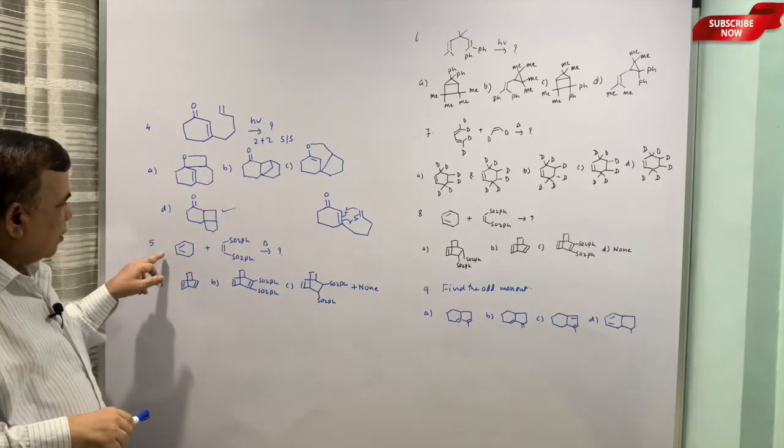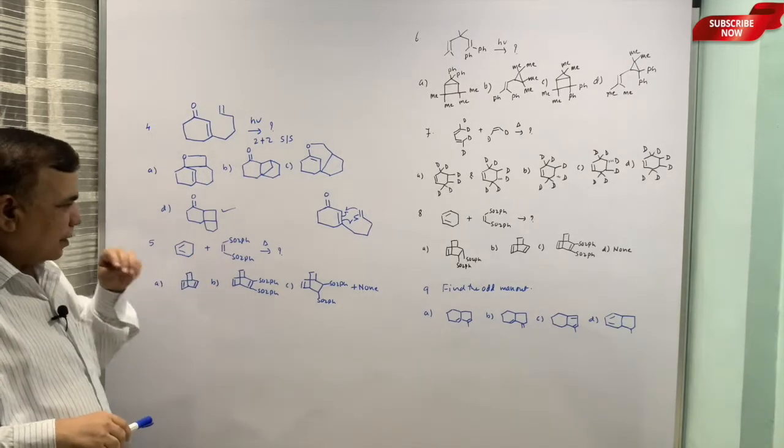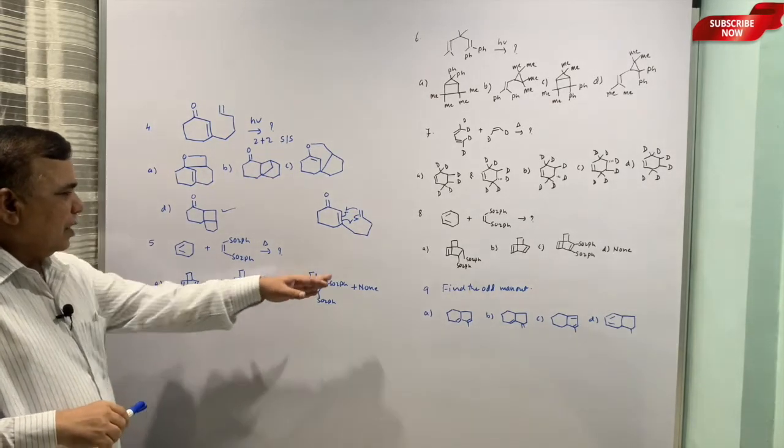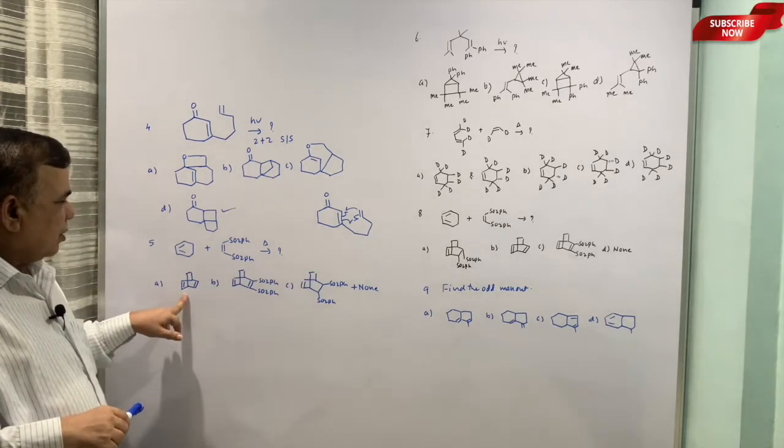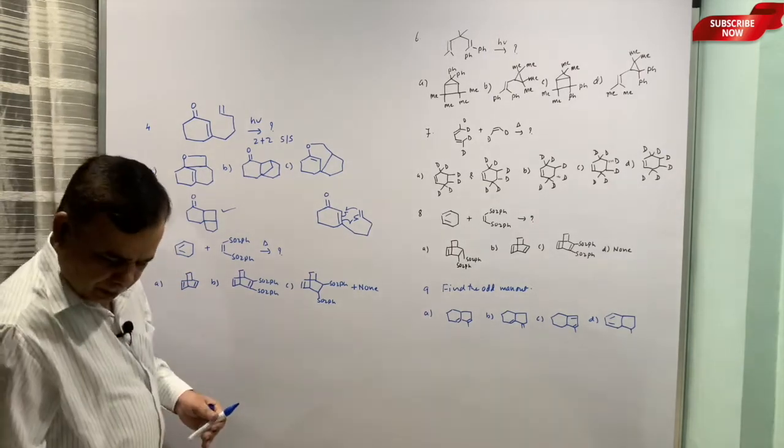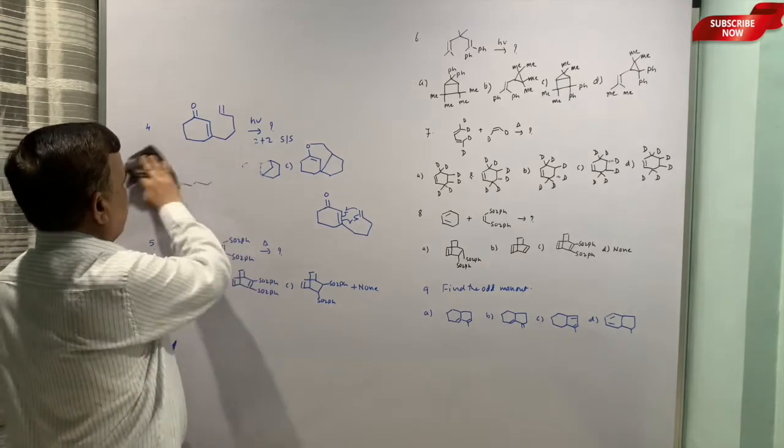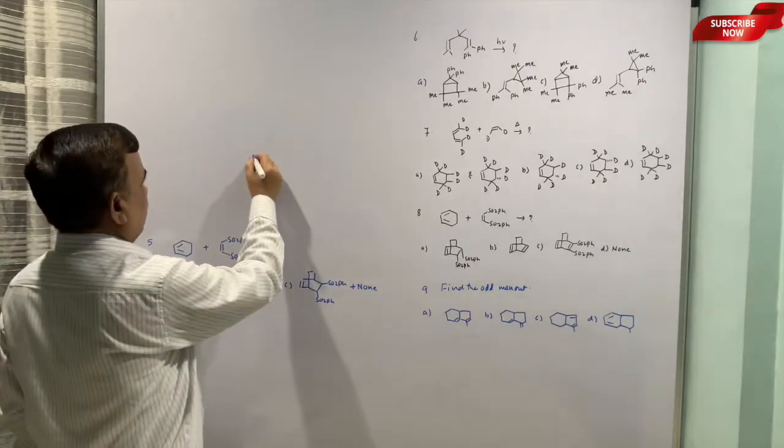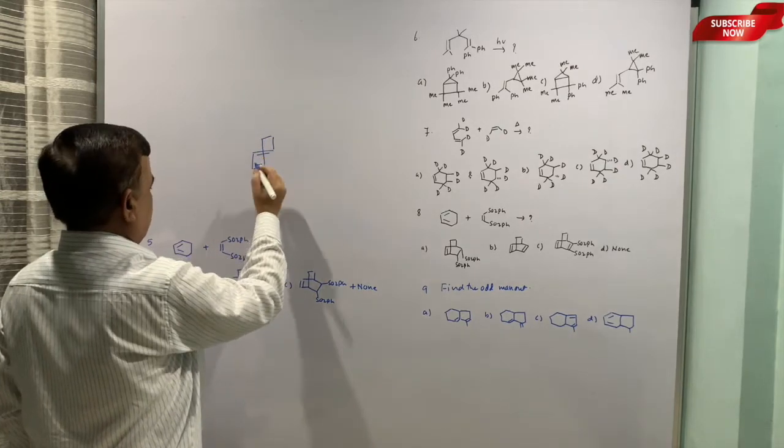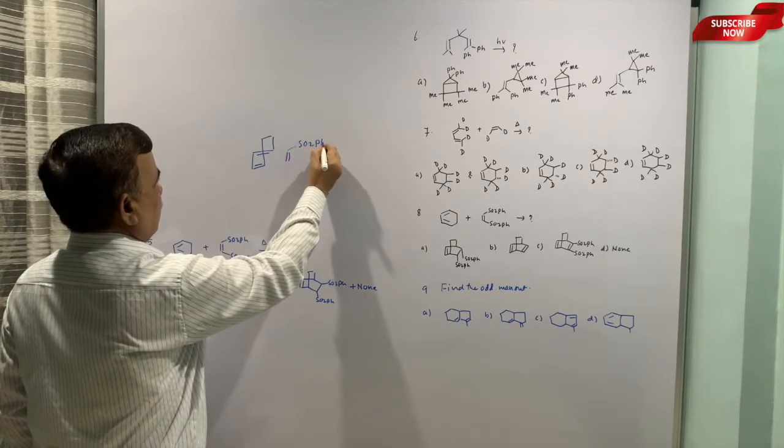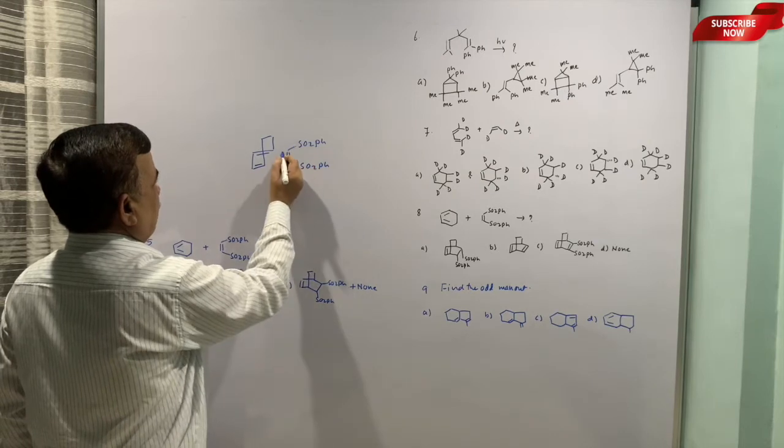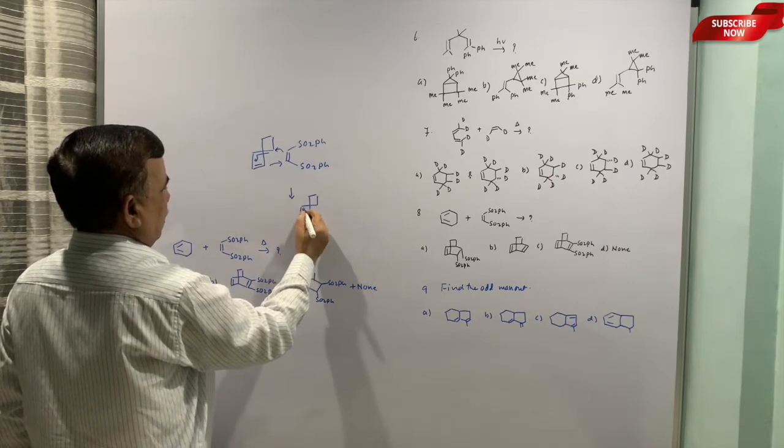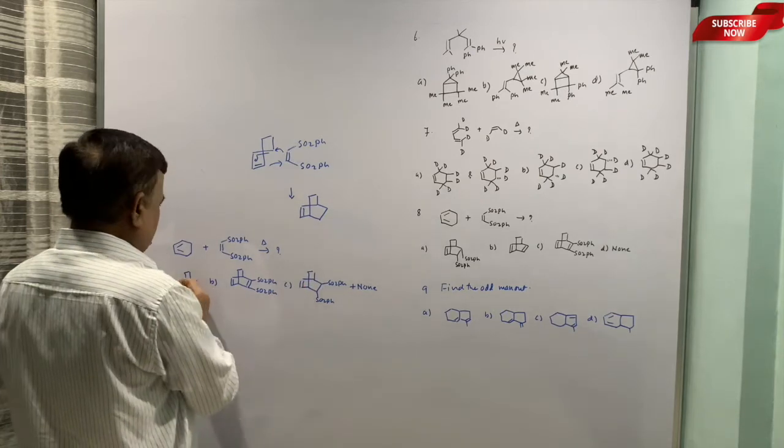Now the fifth example: this diene is treated with the sulfonate under thermal condition. This is classical Diels-Alder reaction and three products are given and last option is none of these. This is not possible because if you draw it in the folded structure then it will be easy to determine which product is formed. So let us draw it this way. This is the cyclohexadiene and then we have this sulfonate. So we have a double bond inside that six-membered ring.